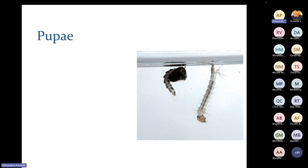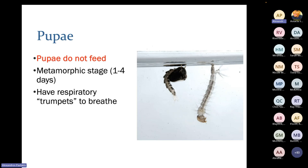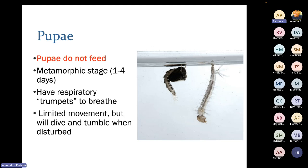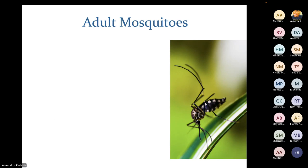From the larval stage, they develop into their pupal stage. In this stage, the pupa do not feed at all — all feeding happens in the larval stage. The pupa develop for one to four days before emerging as adults. They no longer have the siphon but have a respiratory trumpet used to breathe, which is why they hang at the water surface. They have limited movement but will dive and tumble if disturbed or if they sense predators.